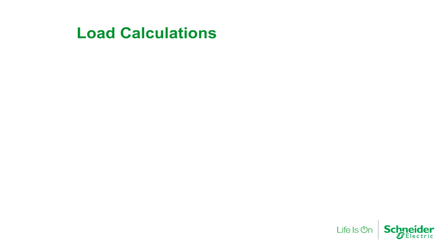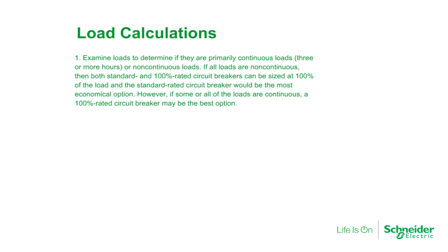When deciding to use standard or 100% rated circuit breakers, the solution is not always a clear-cut decision. The following steps will simplify making this decision. First, examine loads to determine if they are primarily continuous loads or non-continuous loads. If all loads are non-continuous, then both a standard and a 100% rated circuit breaker can be used at 100% of the load, and the standard circuit breaker would be the most economical option.